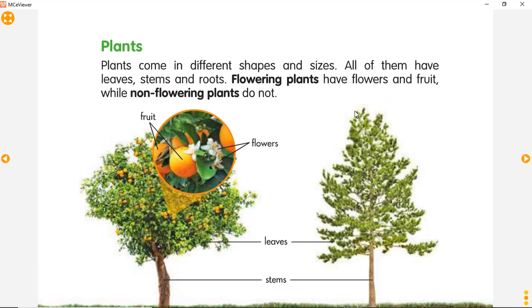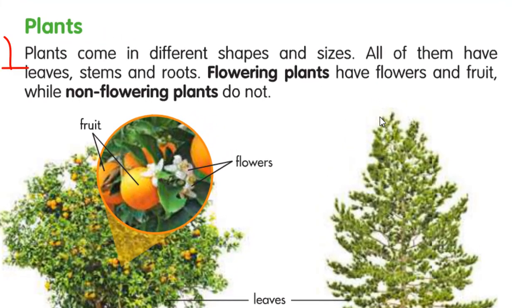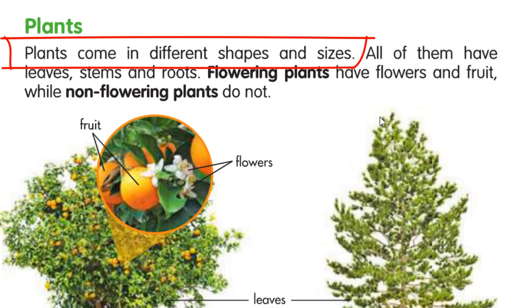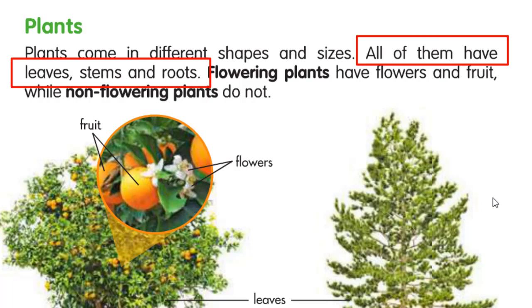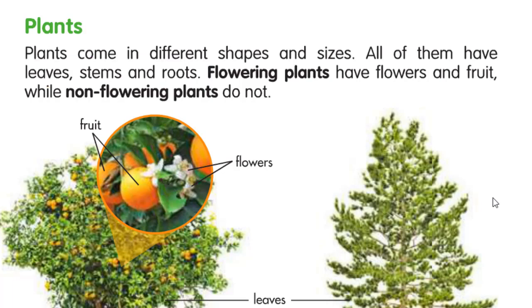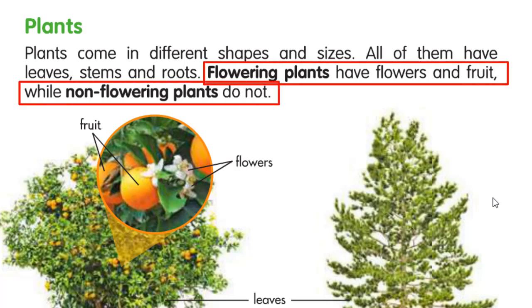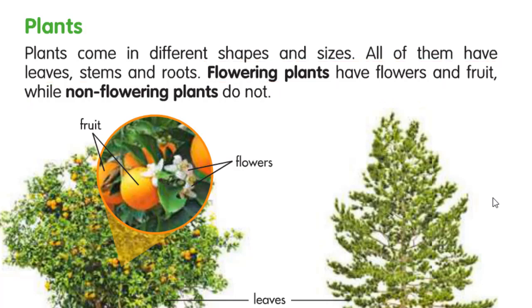Okay, now open the next page. Open page 21. Let's talk about plants. Plants come in different shapes and sizes — plants pun juga sama seperti animals, berbeda bentuk dan ukurannya. Kalau kamu lihat plants, ada yang masih kecil dan pendek, ada juga yang tinggi seperti pohon kelapa. All of them have leaves, stems, and roots. Jadi semua plants — semua tumbuhan — itu pasti memiliki leaves, stems, and roots. Flowering plants have flowers and fruit. Jadi flowering plants — tanaman yang berbunga — itu memiliki bunga dan juga buah.